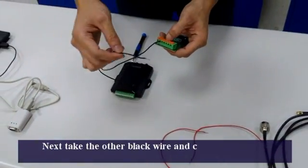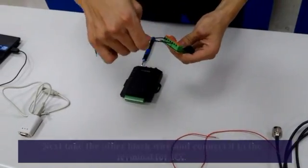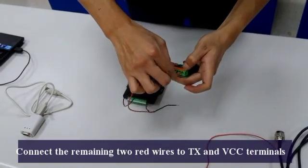Next, take the other black wire and connect it to the terminal for RX. Connect the remaining two red wires to TX and VCC terminals.